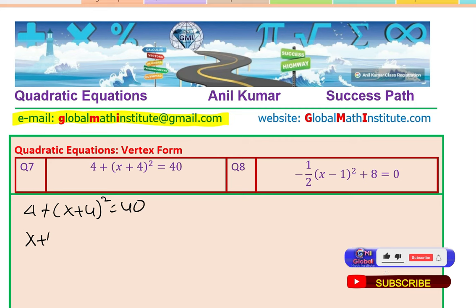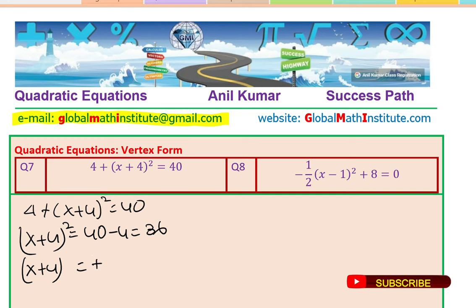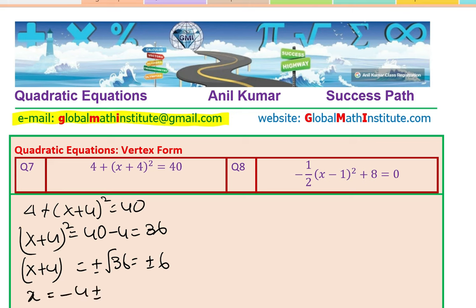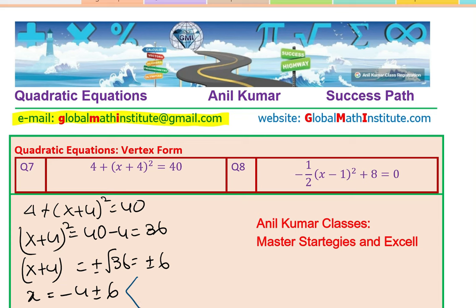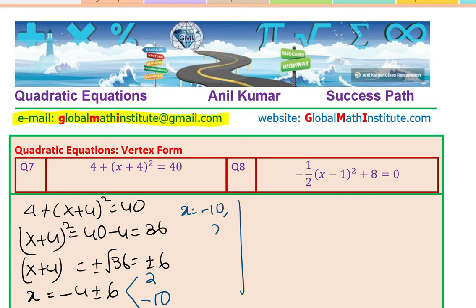So (x plus 4) whole square equals 40 minus 4, which is 36. Taking the square root, x plus 4 equals plus or minus square root of 36, which is plus or minus 6. So x equals minus 4 plus or minus 6. The two solutions are x equals minus 4 plus 6 which is 2, and minus 4 minus 6 which is minus 10. So x equals minus 10 or 2.